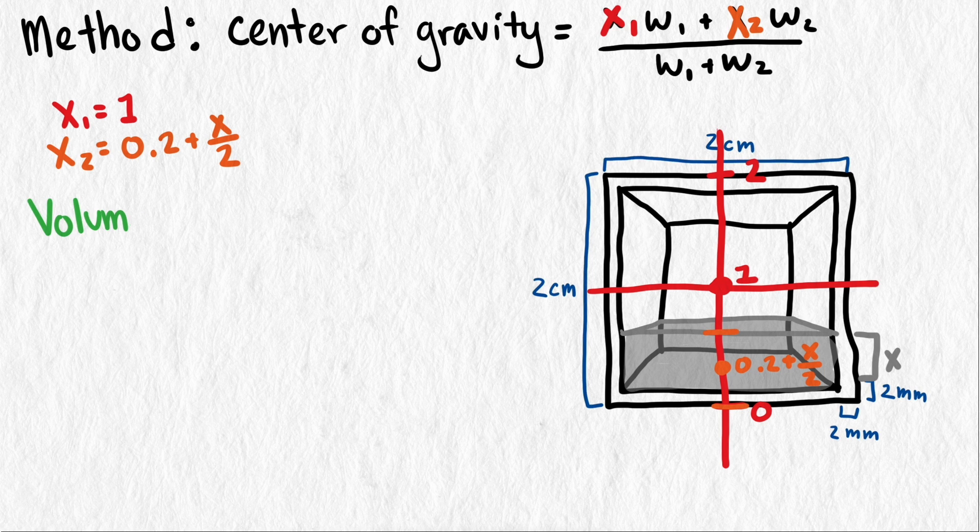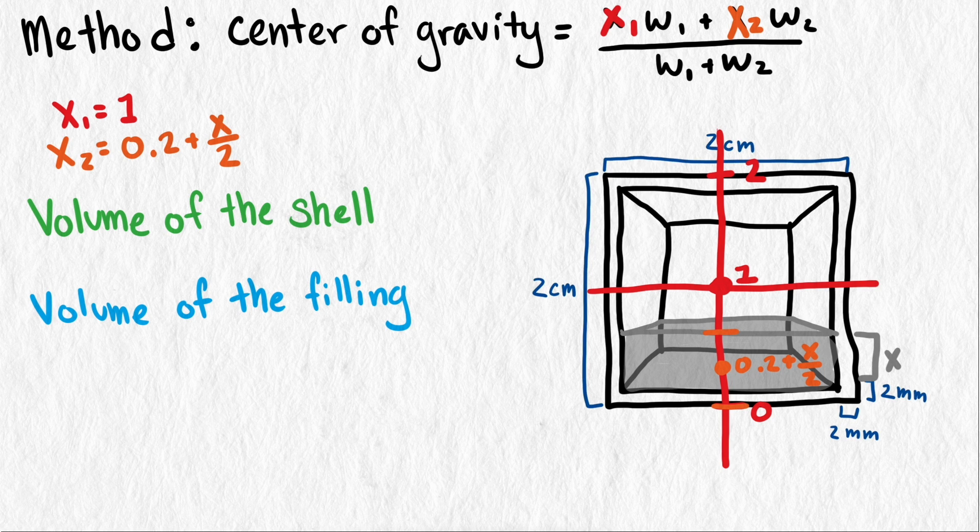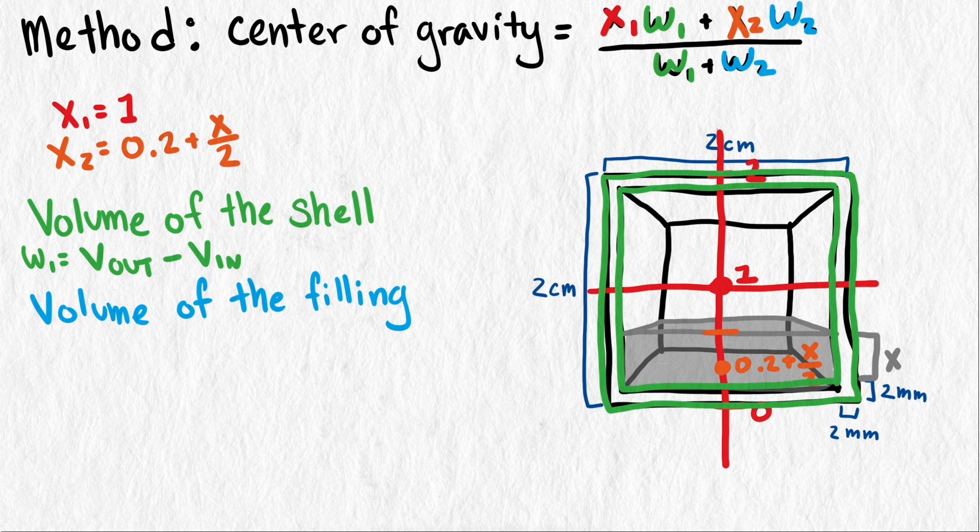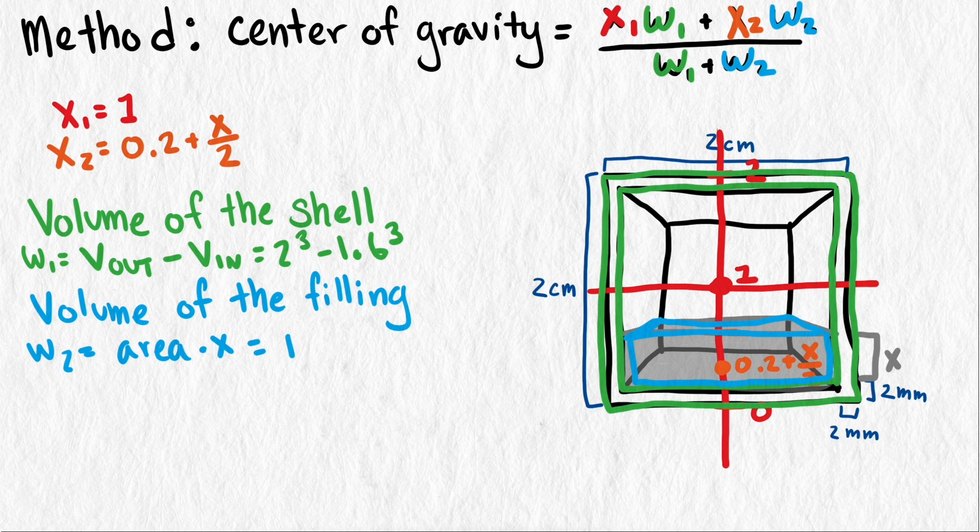The weight of each is proportional to the amount of plastic in each piece, so we can just calculate the volume of the shell and the volume of the filling and use those as weights. The shell is easy if we think of it as the volume of a large cube minus the volume of an inner, smaller cube. 2 to the third minus 1.6 to the third. The volume of the filling is a rectangular solid with a square base, so it is the area of the square base times the height, or 1.6 times 1.6 times x. Now we can put all of these into our formula.